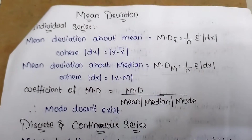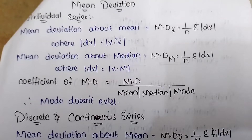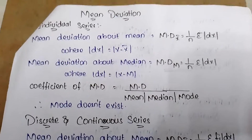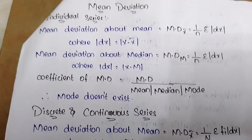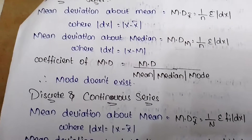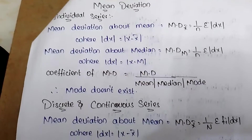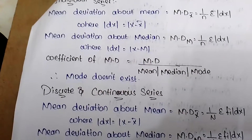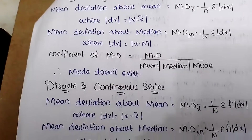Mean deviation from mean (individual series) = (1/n) Σ|dx|, where dx = x − x̄. Mean deviation from median = (1/n) Σ|dx|, where dx = x − median. Coefficient of mean deviation = mean deviation / mean (or median or mode). Note: mode does not exist for discrete series.